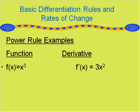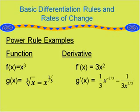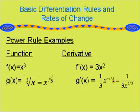Here are some examples of the power rule. For f of x equals x cubed, f prime of x equals 3x squared. For g of x equals the cube root of x, we rewrite this as x to the 1/3. Using the power rule, g prime of x equals 1/3 times x to the negative 2/3 — found by bringing the exponent 1/3 down as a coefficient and subtracting 1 from 1/3 to get negative 2/3 as the new exponent.